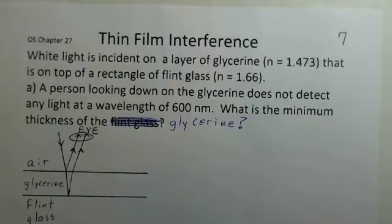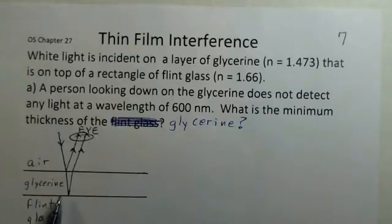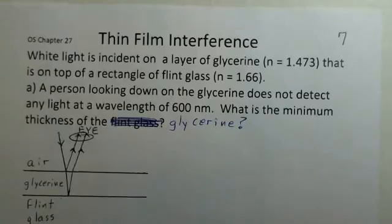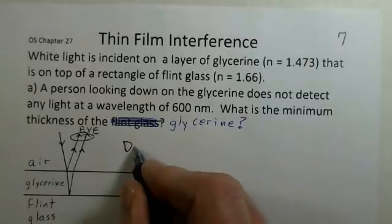An instrument tells them there's no energy at a wavelength of 600 nanometers. So we want to calculate the thickness of the glycerin — how thick is this thin film such that we end up with destructive interference for the wavelength of 600 nanometers.